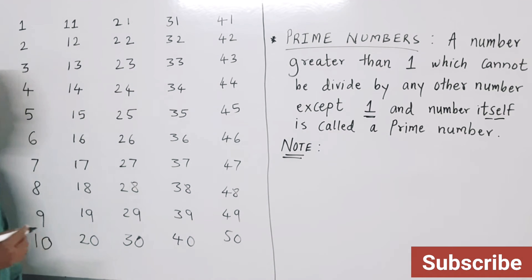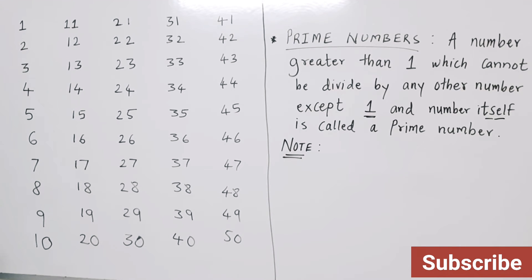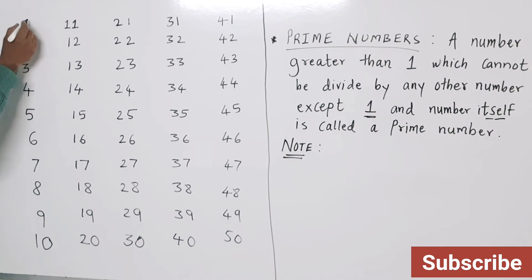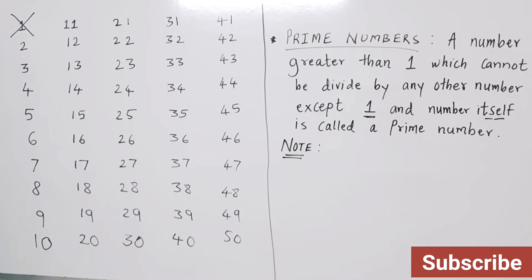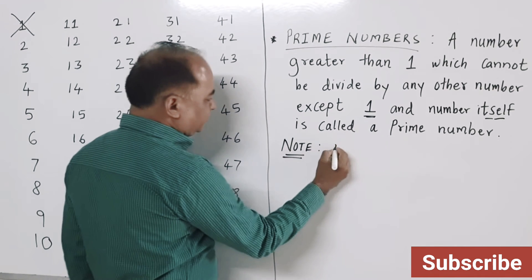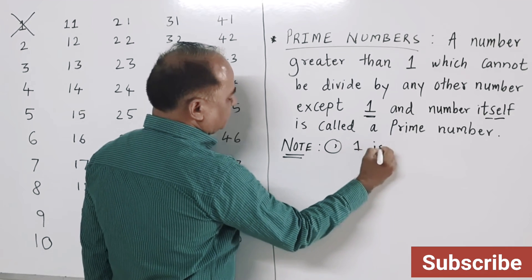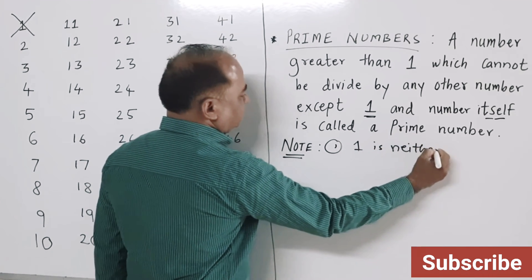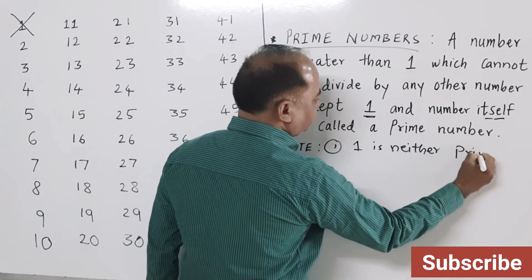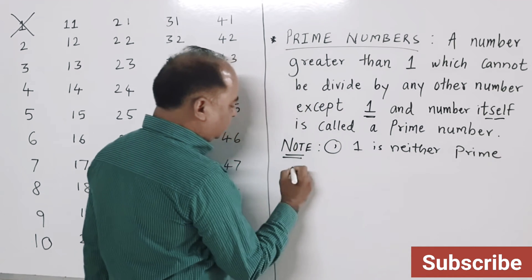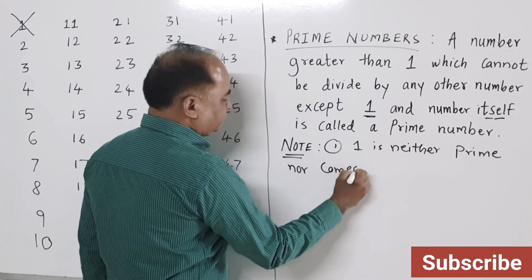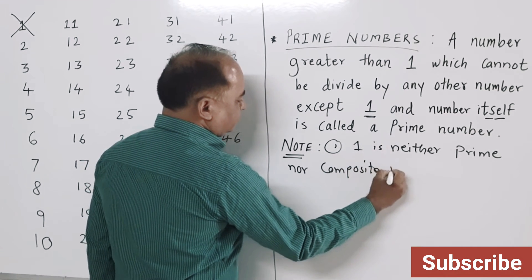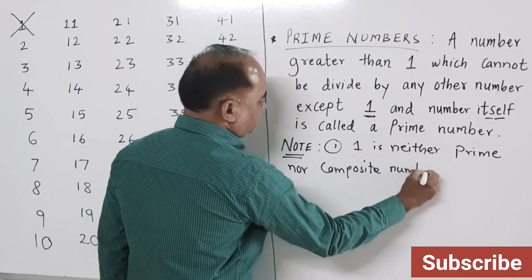Starting with the first number, 1: the number 1 is neither prime nor composite. It is not classified as either.